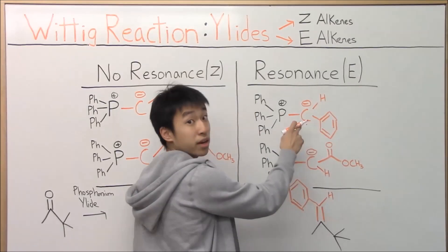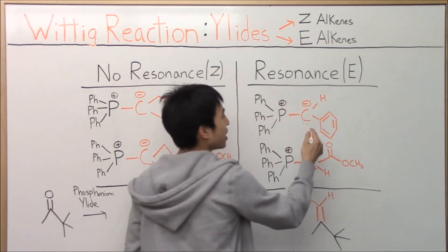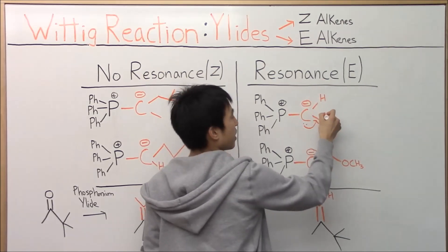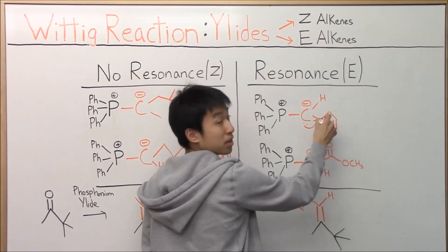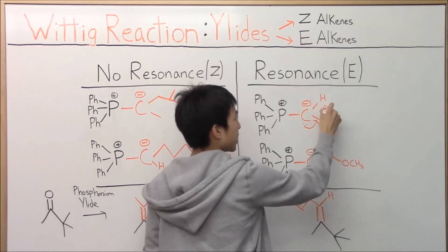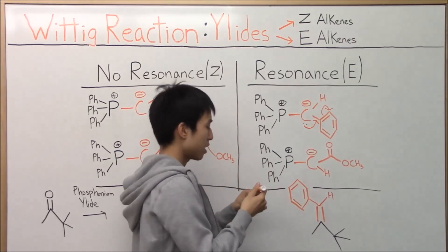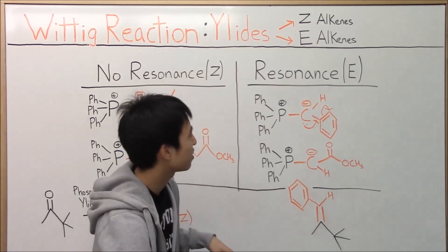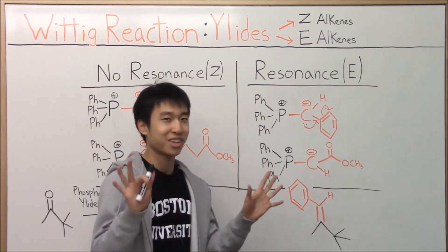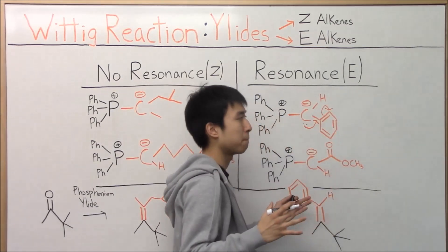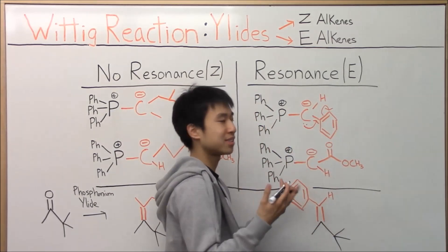The electrons on the carbanion or a carbon with a negative charge can simply resonate over here to form a double bond and then the double bond of the benzene ring can resonate over here. Technically there's a lot more possible resonances, but I'm not going to take the time to show you that because it's overly complicated and you guys don't need to worry about it. You just need to worry about being able to recognize resonances.